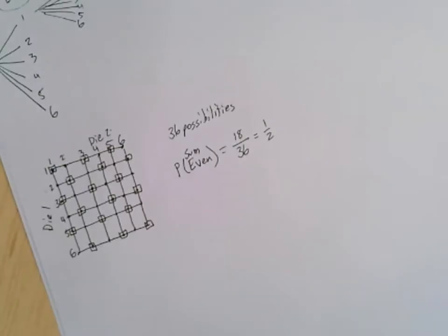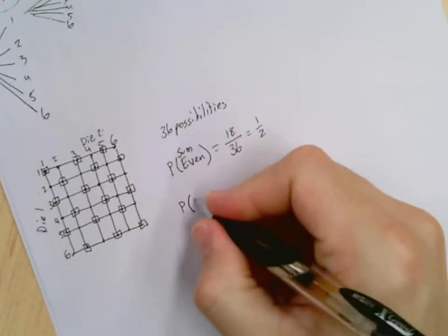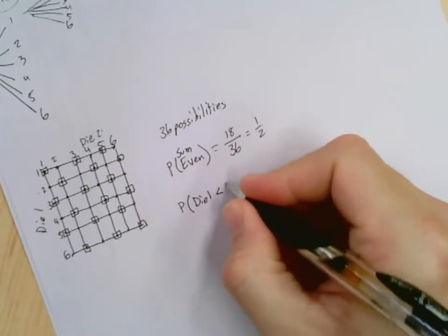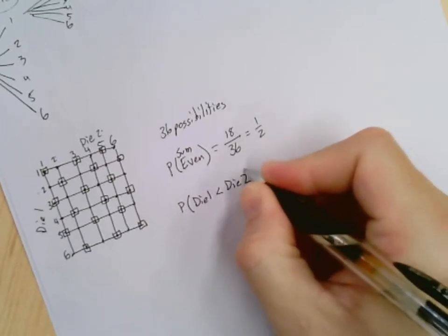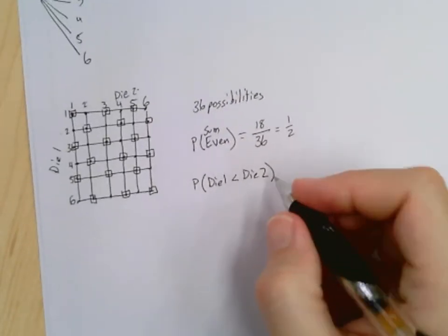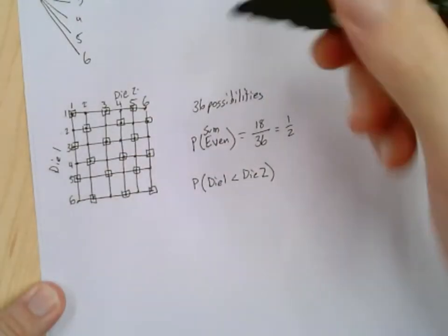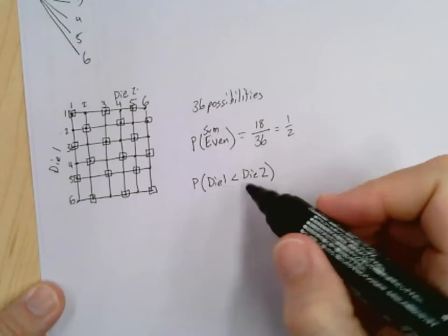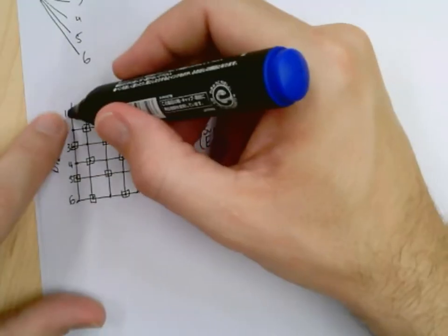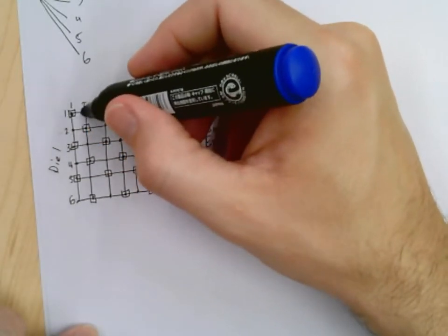We can answer other questions. How about, what is the probability that die one is less than die two? Can we answer that question? Of course. We can find the points on the graph. I'm going to use a blue marker this time to help us differentiate. So I want to find the places where die one is less than die two. So here they're both one. Now, here, die one is one, die two is two. So right there, die one is less than die two.